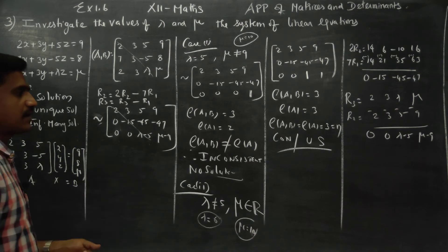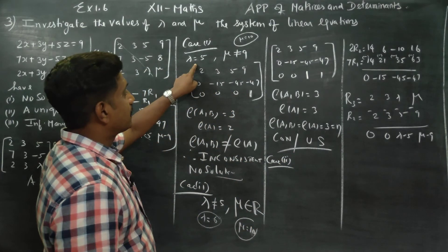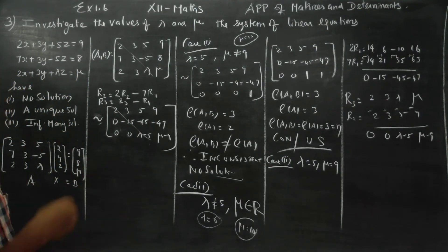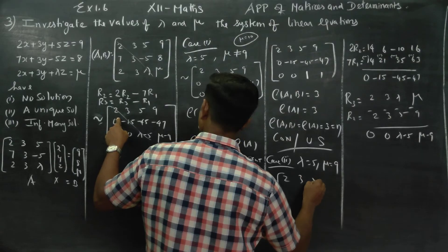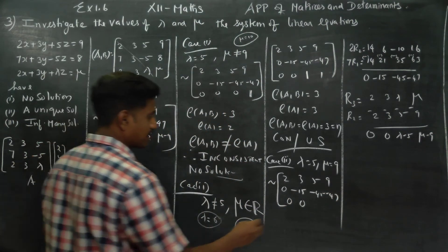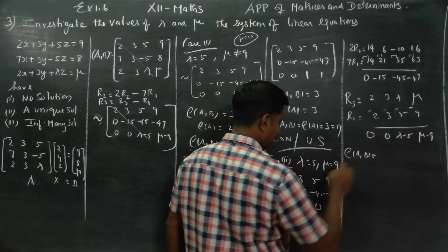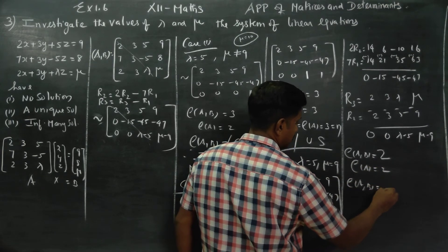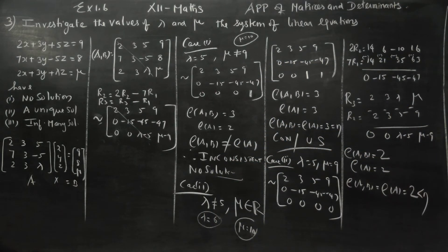Case 3: infinitely many solutions. When lambda = 5 and mu = 9, in the augmented matrix [A|B] the last row becomes: 5 minus 5 = 0 and 9 minus 9 = 0, so the last row is all zeros. Rank of [A|B] = 2 and rank of A = 2. Since rank of A equals rank of [A|B] equals 2, which is less than n = 3 (number of unknowns), the system is consistent and has infinitely many solutions.